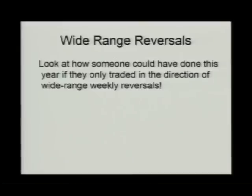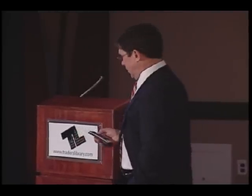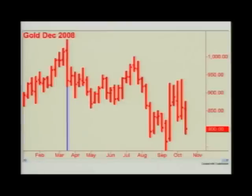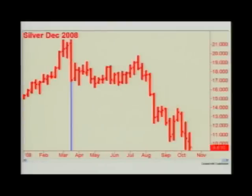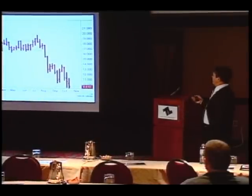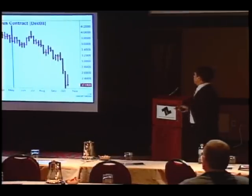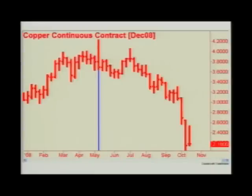Wide-range reversals — I already mentioned that I love wide-range reversals. When I was putting this together, I was astounded at how many amazing divergences there were on the weekly charts this year. My friend who said he should only trade off the weeklies and golf could easily have done that looking at just these wide-range reversals. Here we have one in gold — you can see what happens. Silver shows a similar pattern. If I were acting on wide-range reversals, I would certainly buy options, and this is an example of why you need to buy time — it went sideways for several months but finally worked out very well.